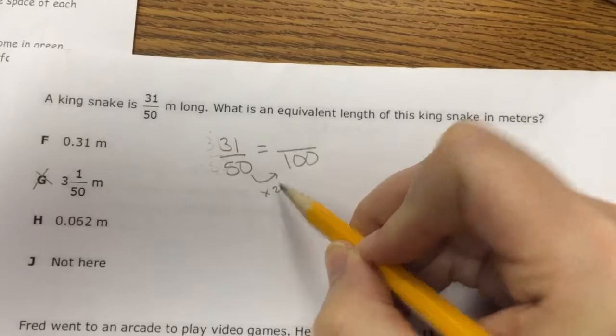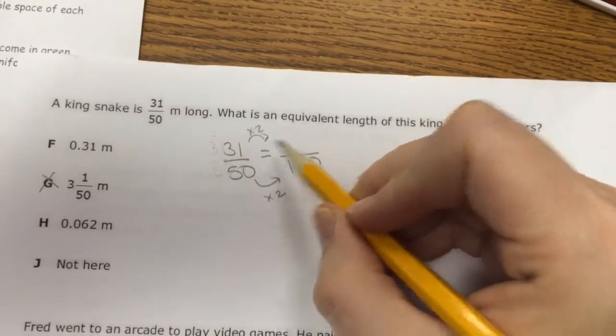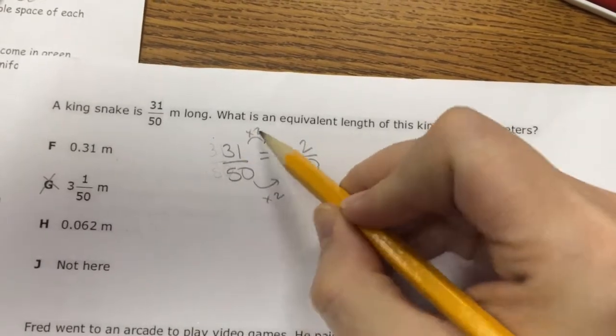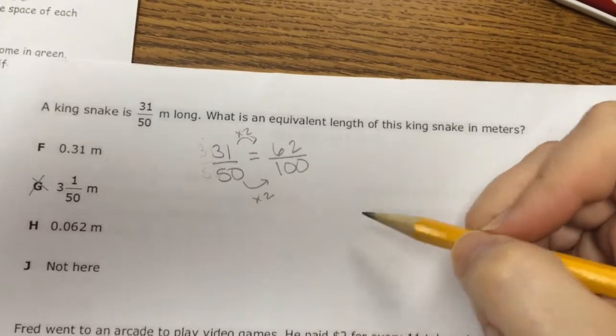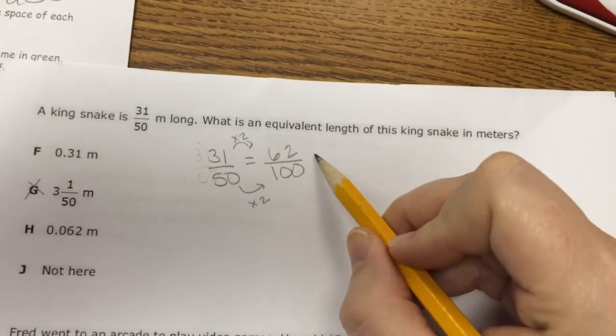50 times 2 gives me 100. So I'll do 31 times 2 to find the top part. 1 times 2 is 2. 3 times 2 is 6. So I have 62 hundredths.